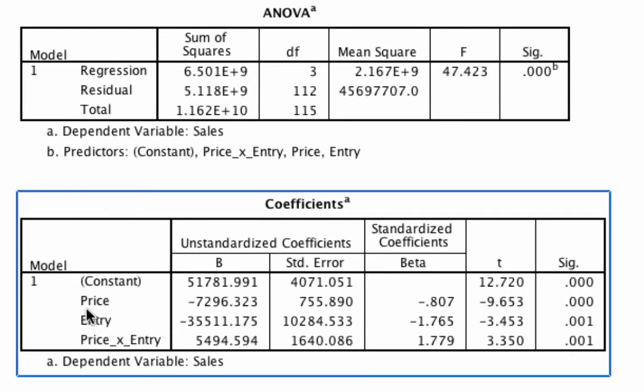First, we see that there's an effect of price. It's significant. Such that the higher the price in general, the fewer sales we have. Second, we see an effect of entry. It's significant as well. Such that after entry, remember this is a 0 or a 1, after entry, sales go down by 35,000 units.